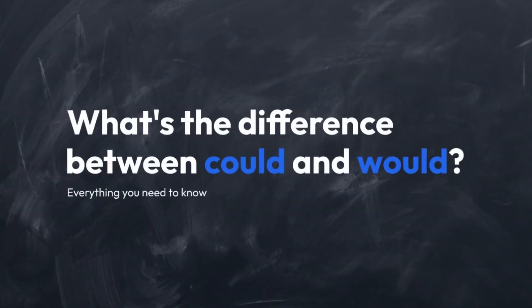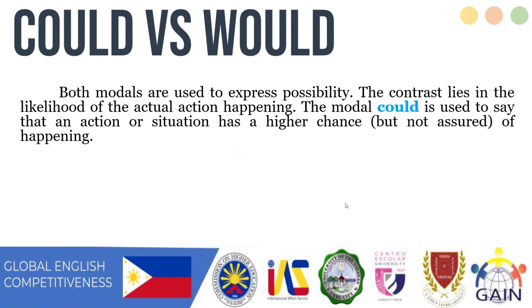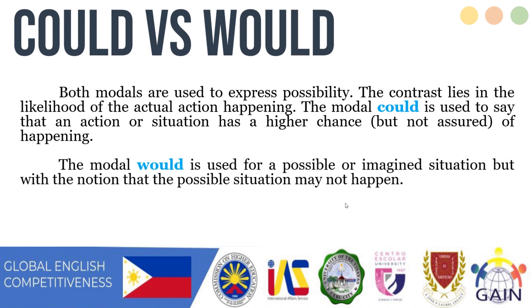Now let's talk about the difference between could and would. Both modals are used to express possibility. The contrast lies in the likelihood of an actual action happening. Could is used to say that an action has a higher chance, but is not assured, of happening. Would is used for a possible or imagined situation, with the notion that it may not actually happen.